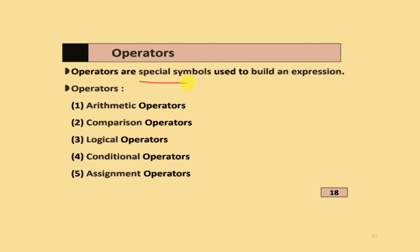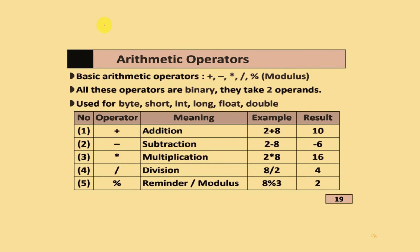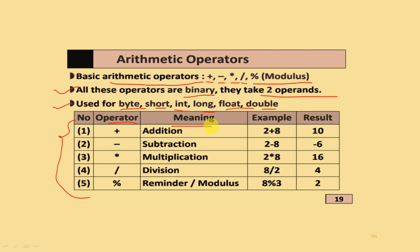Operators are special symbols used to build an expression. We use: arithmetic operators, comparison operators, logical operators, conditional operators, and assignment operators. For arithmetic operators, we use basic operators like plus, minus, multiplication, division, and the modulus symbol. All these are binary operators that take two operands, and can be used for byte, short, int, long, float, and double data types.